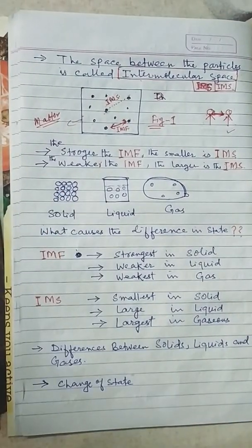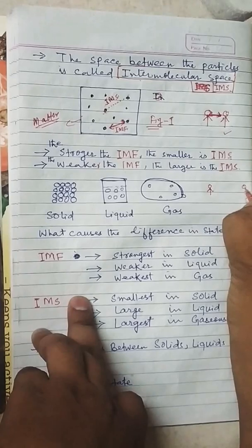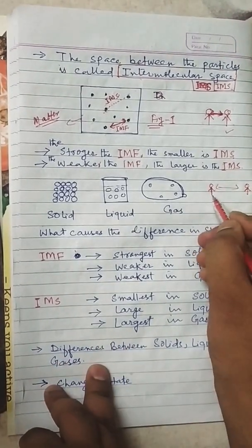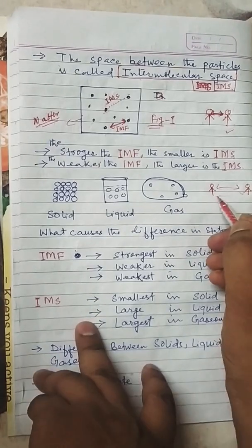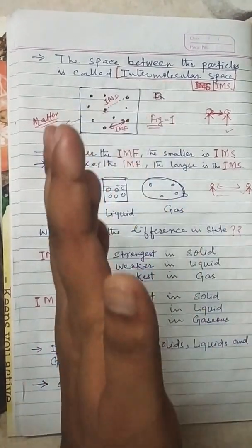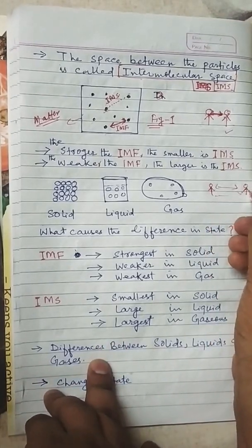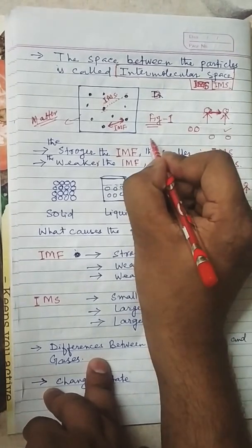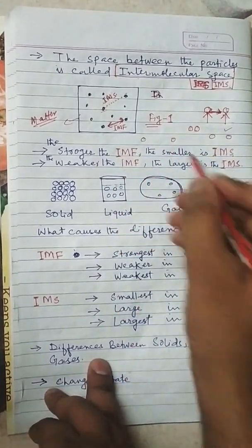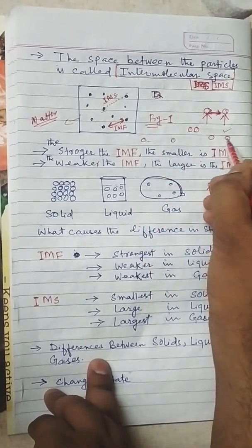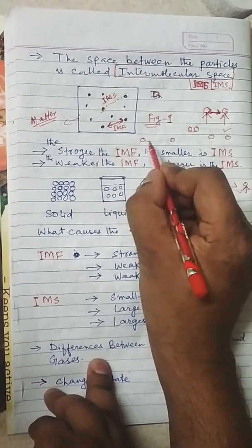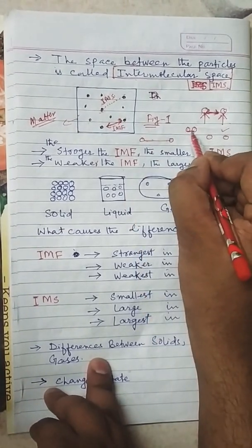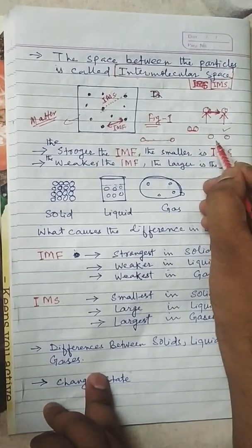However, the weaker the intermolecular force of attraction, the larger the intermolecular space. Here the two friends are living very far from each other, so their attraction is less because they are living separately. Look at this — this gap is very large, this gap is small, and this gap is the smallest. So maximum gap means force of attraction is minimum, minimum gap means force of attraction is maximum.